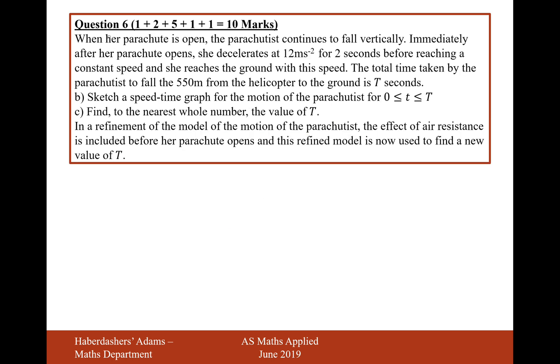Moving on to the second part, when her parachute is open, the parachutist continues to fall vertically. Immediately after her parachute opens, she decelerates at 12 meters per second squared for 2 seconds before reaching a constant speed, and she reaches the ground at this speed. The total time taken by the parachute is to fall 550 meters from the helicopter to the ground is T seconds. Sketch a speed time graph for the motion between 0 to T. So we'll have speed on the vertical axis, time on the horizontal axis. Let's make sure we put those in and put the units on them.